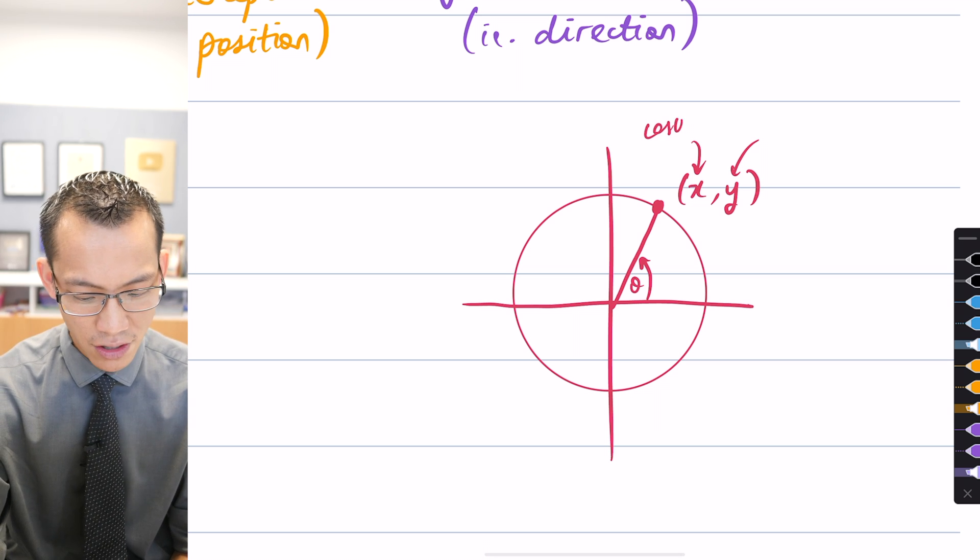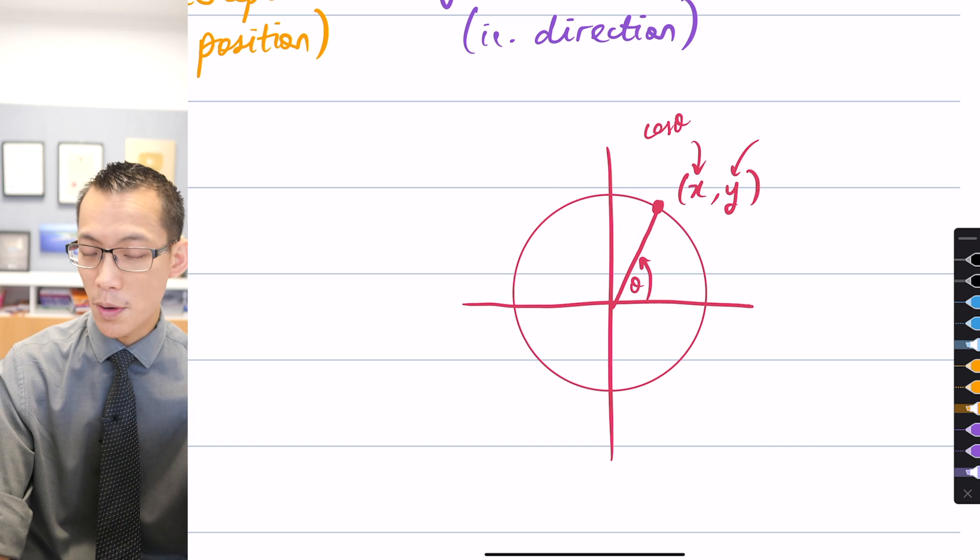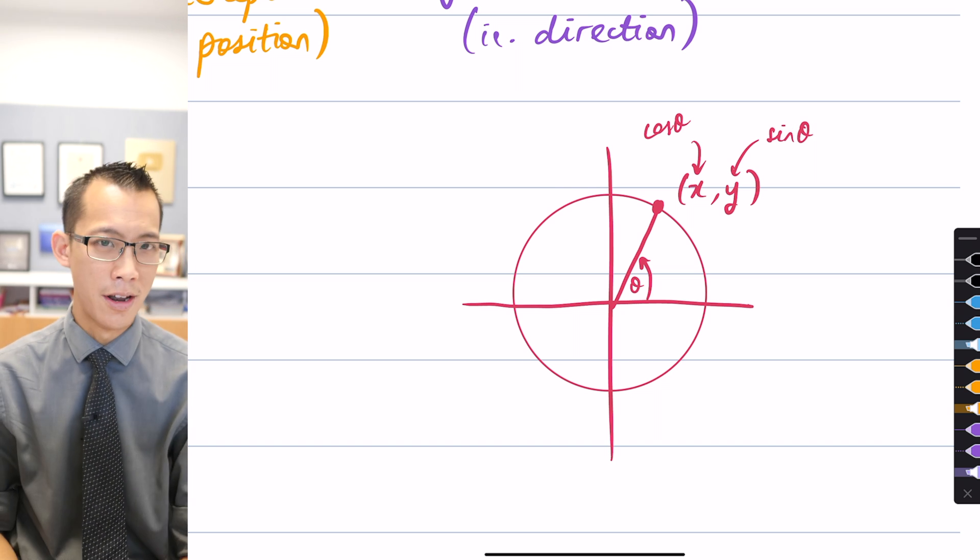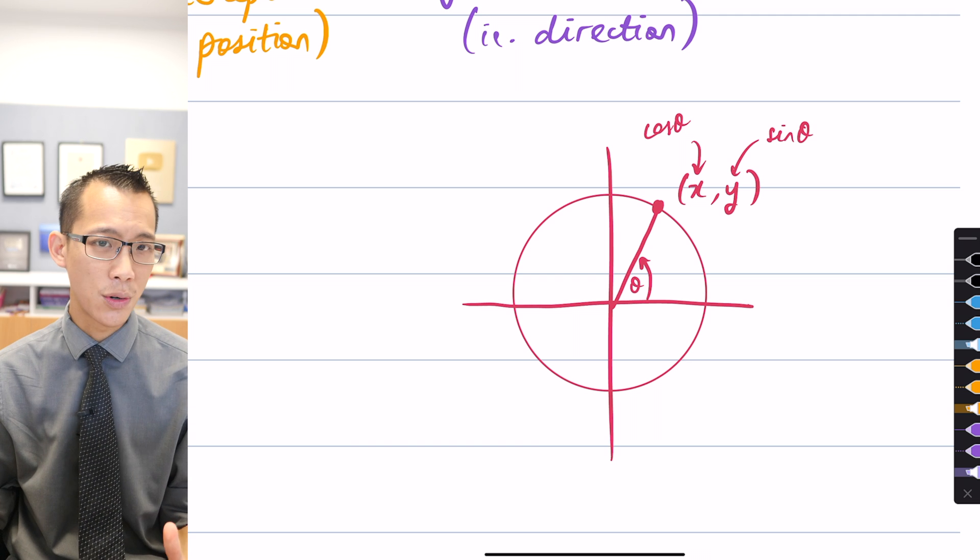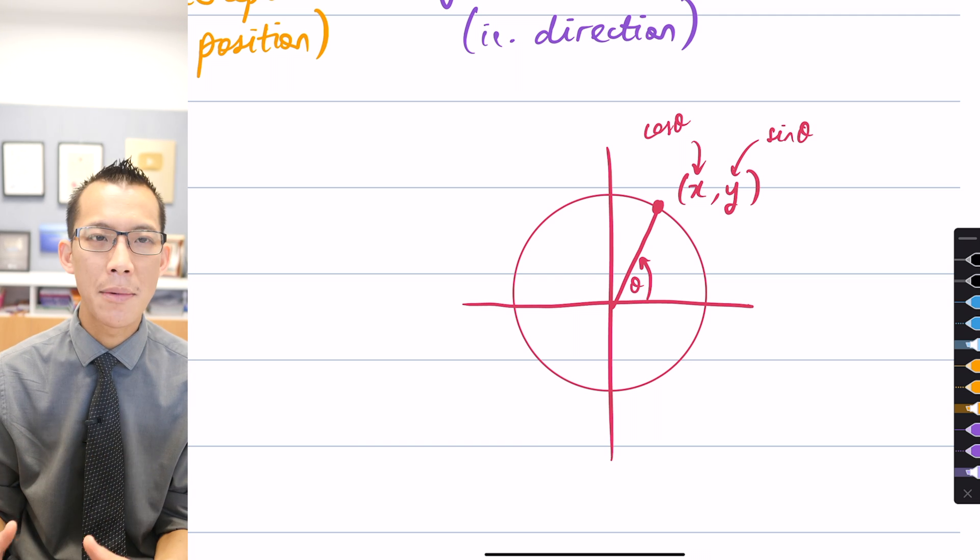Yeah, very good—that's cos theta. And correspondingly, it's sine theta for the y coordinate. So on the unit circle, we say that theta is the parameter.